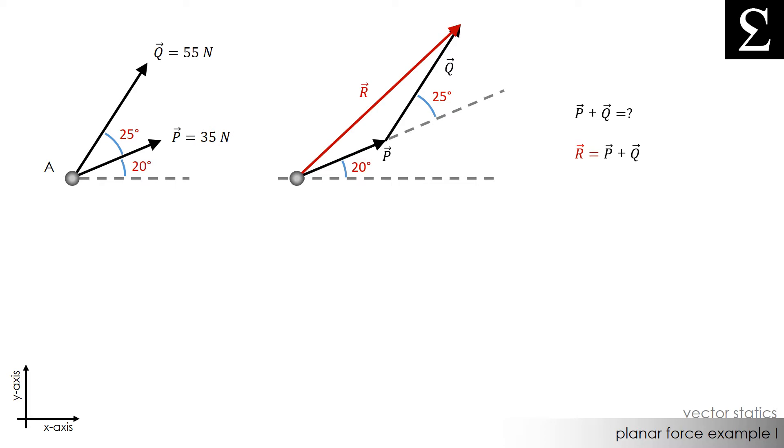You can see now the triangle that formed when vector R was drawn in. If I draw this triangle out again, we can see that side A corresponds to the magnitude of vector P, side B corresponds to the magnitude of vector Q, and the angle formed by sides A and B is 155 degrees. We got this by subtracting 25 degrees from 180 degrees.